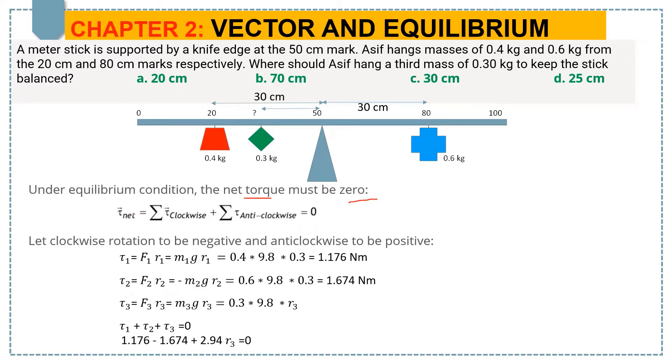The formula is: net torque equals summation of all clockwise torques plus summation of all anticlockwise torques equals zero. Here, let's take clockwise rotation as negative and anticlockwise rotation as positive.